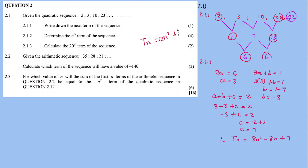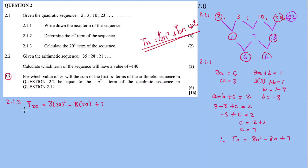So the general formula for the quadratic sequence is Tn = an² + bn + c, and we've found Tn = 3n² − 8n + 7. For 2.1.3, we need the 20th term. We substitute n = 20 into the nth term formula.